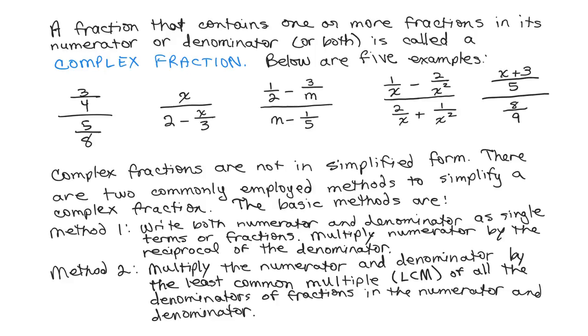In my example, the very first one is in that form, so method one works very well for that. For the rest of them, method two is actually easier for most people. You multiply the numerator and denominator of the complex fraction by the least common multiple of all the denominators of fractions in the numerator and denominator. This eliminates the complex fraction in the first step.